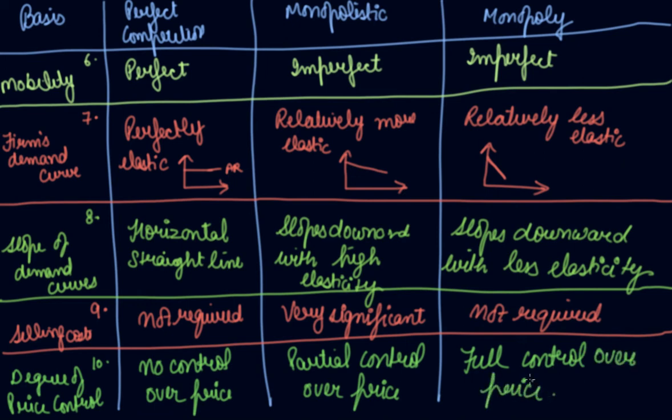So these are the ten differences between perfect competition, monopolistic competition, and monopoly. If you understand one difference you will definitely succeed in your CBSE board exam. You can consult this video for that. I hope you like our video. Please download our Scholars Learning app and enjoy the learning experience with us.